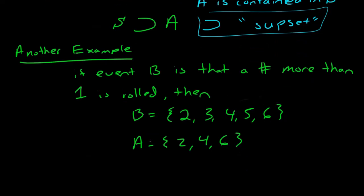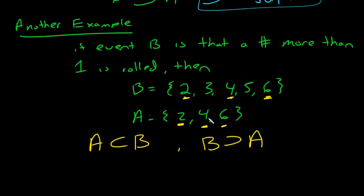Notice that these numbers in A, all of the numbers showing up in A, are contained in B. So A is contained in B, A is a subset of B. And you could write this as B is a supset of A, same thing. Because these numbers in A are contained in B.